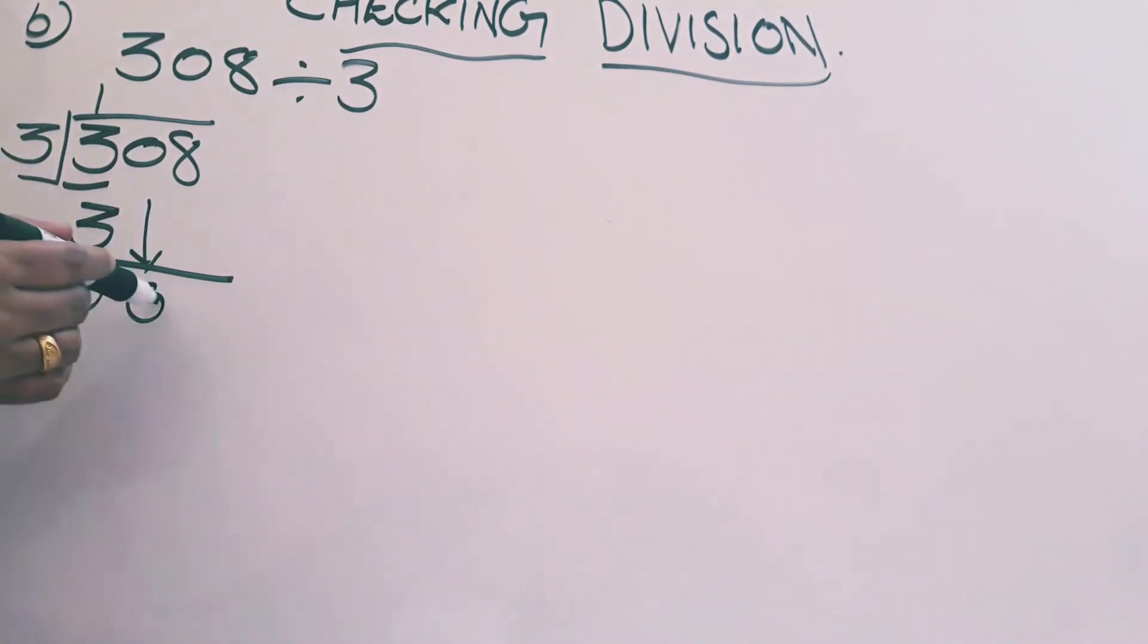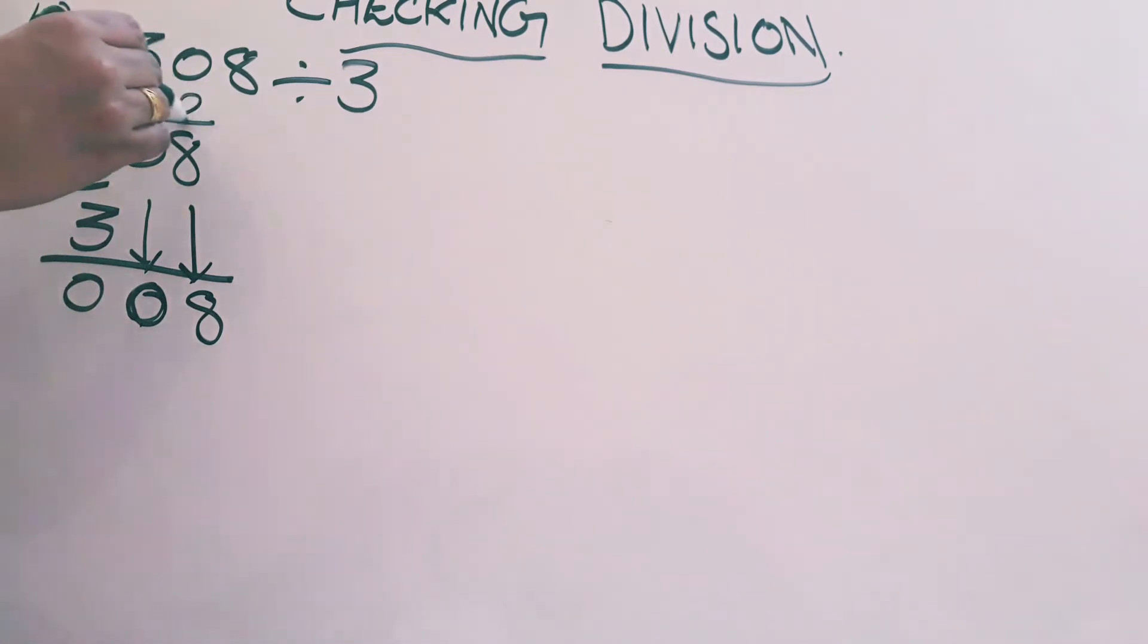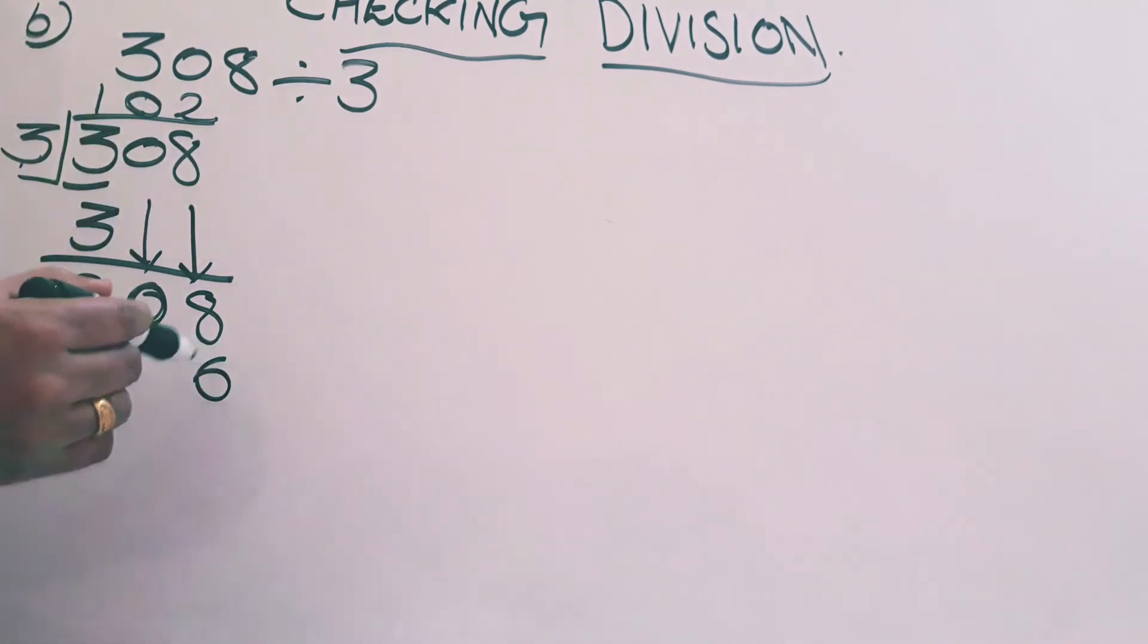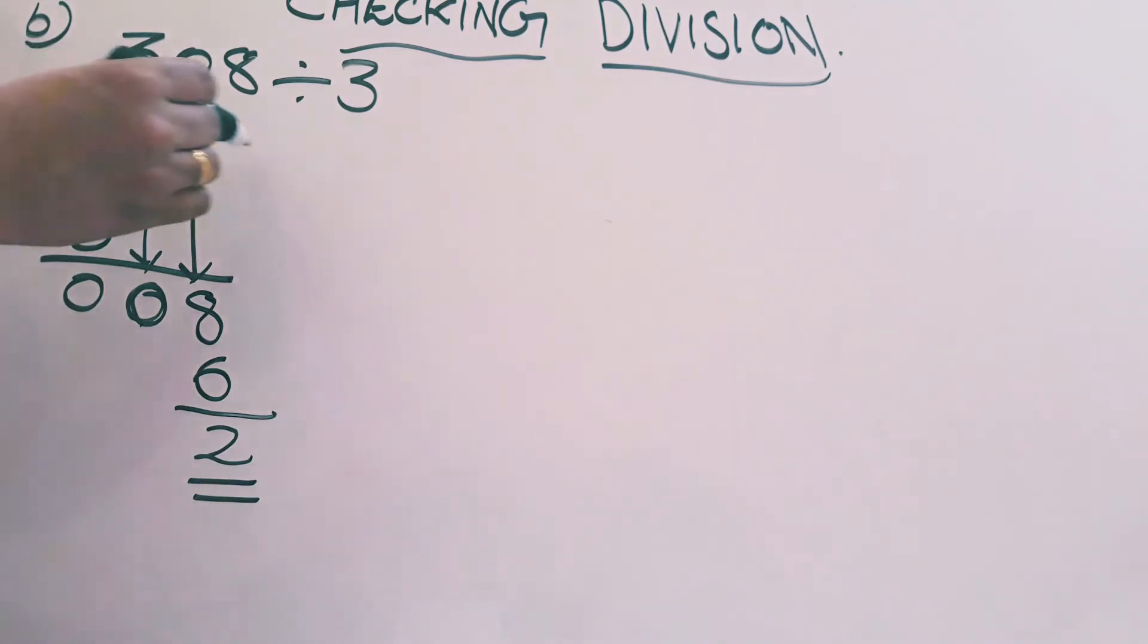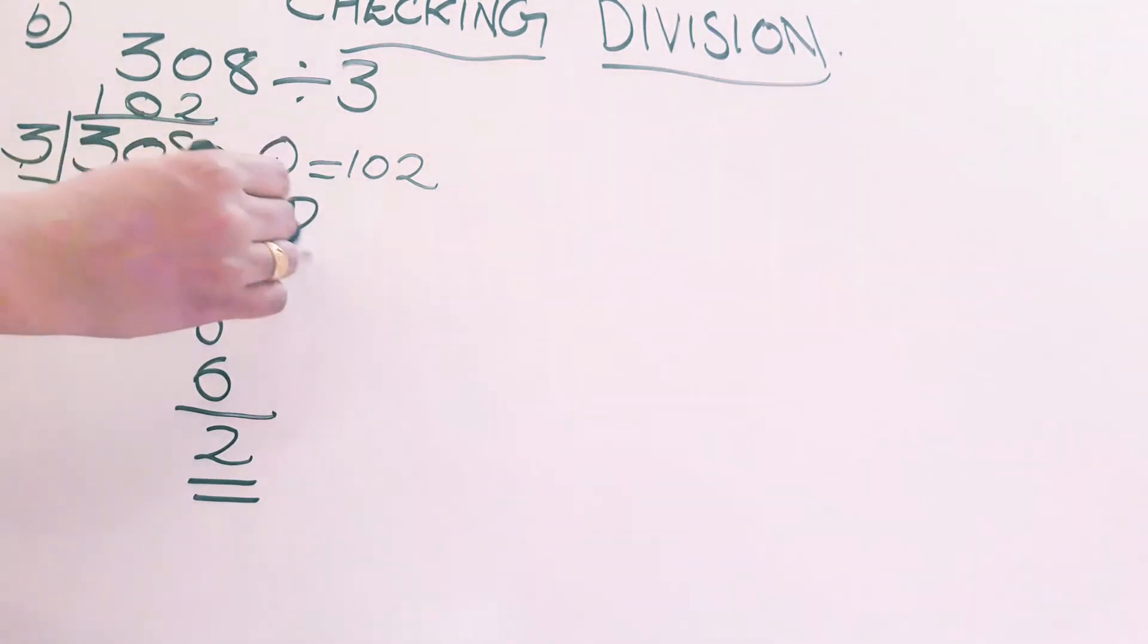Bring down this 0. Before, I told you, when we bring down a number, if it is less than the divisor, put a 0 in quotient's place. After that, bring down the next number also. Here, 8. 0 0 8 means it is 8 only. In threes table, 8 is not there, but 6 is there. 3 twos are 6. Write 2 on the top of this 8. Multiply 3 twos are 6. Underline. 8 minus 6 is 2. We got the answer. Quotient is equal to 102, remainder is equal to 2.